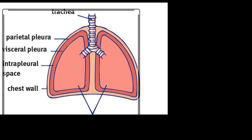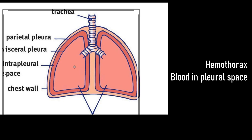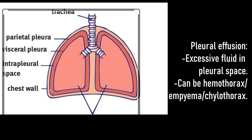Now let's see the indications for chest tube. Hemothorax — blood in the pleural space. Pneumothorax — air in the pleural space. Pleural effusion, that is excessive fluid in the pleural space. This can be hemothorax — blood — or it can be pus or infection, which is called empyema, or chylothorax, that is lymphatic fluid in the pleural space. In these cases a chest tube is inserted to drain. It is also inserted after cardiac or lung surgery.